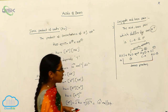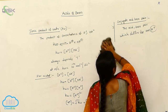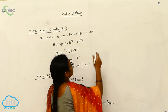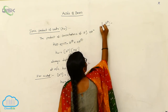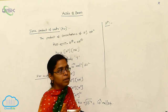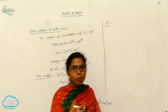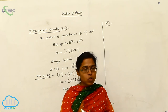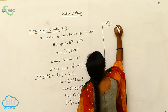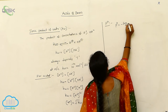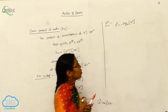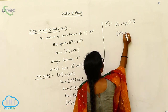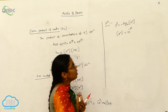In acid-base concepts, one important terminology is pH. The definition of pH tells us about the concentration of H⁺ ions. The mathematical equation is: pH = −log₁₀[H⁺], which means [H⁺] = 10⁻ᵖᴴ.